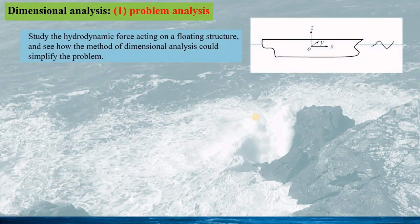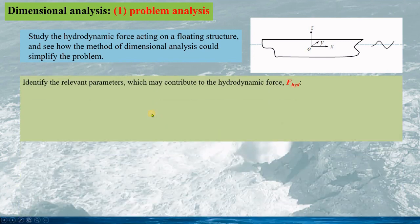In the next few slides, we will use dimensional analysis to study the hydrodynamic force acting on a floating structure under the action of a wave, and we will see how the dimensional analysis could simplify the problem. The first step is to identify the physical variables which might have effects on the hydrodynamic force, F_HYD.